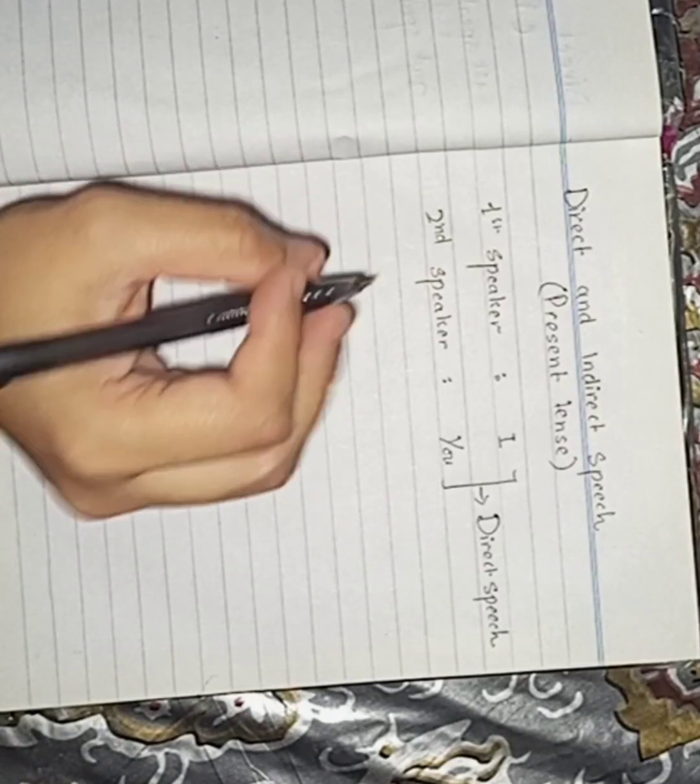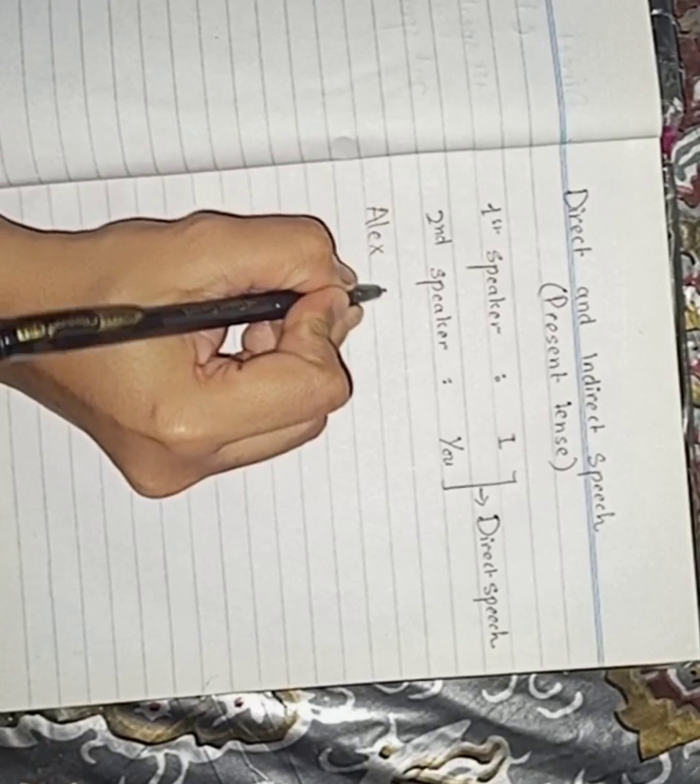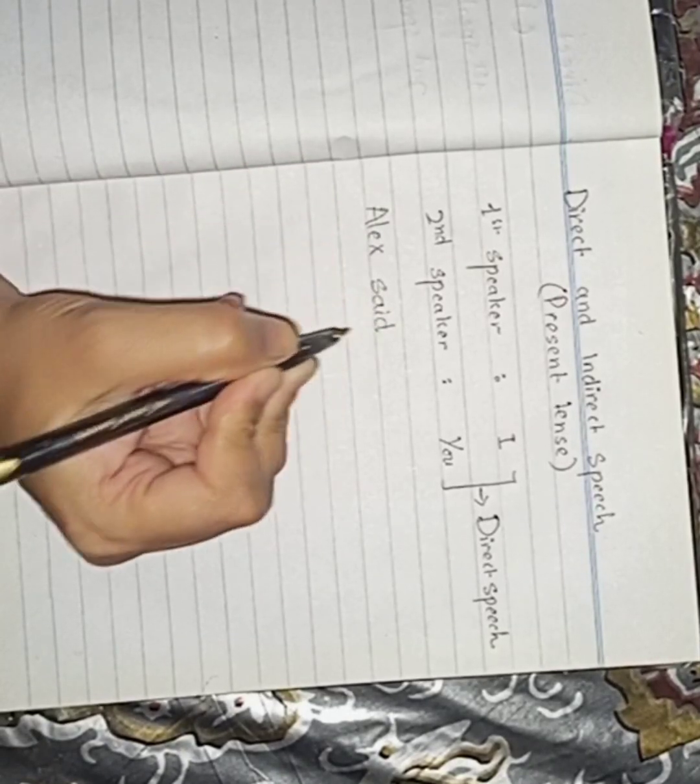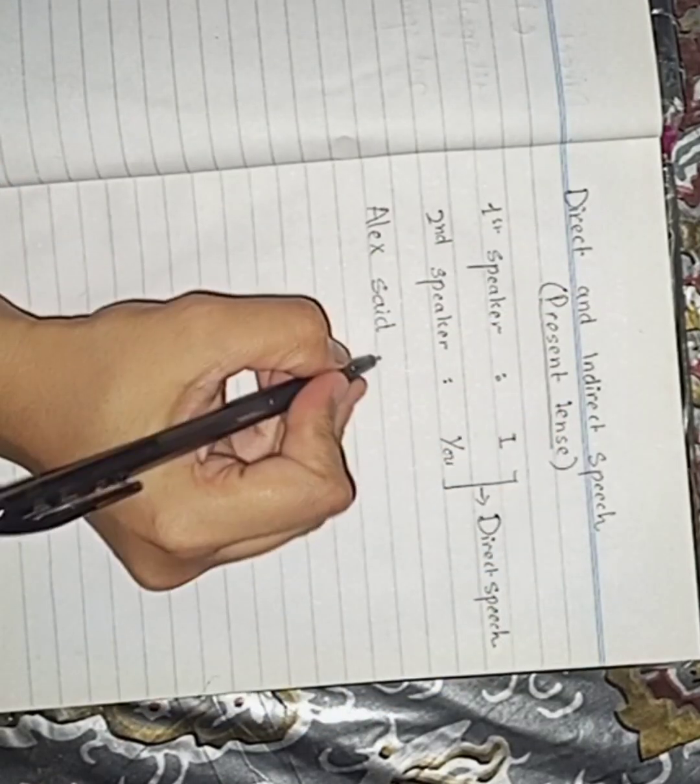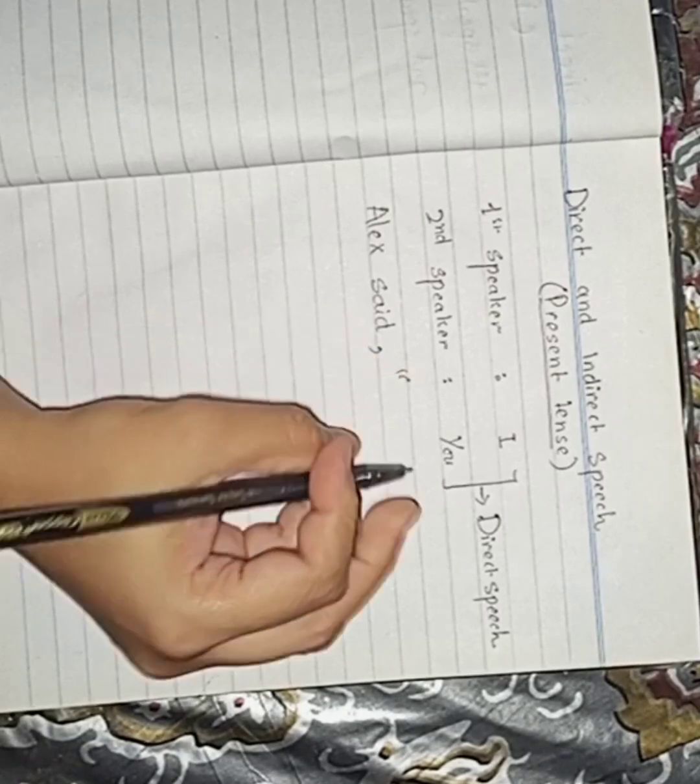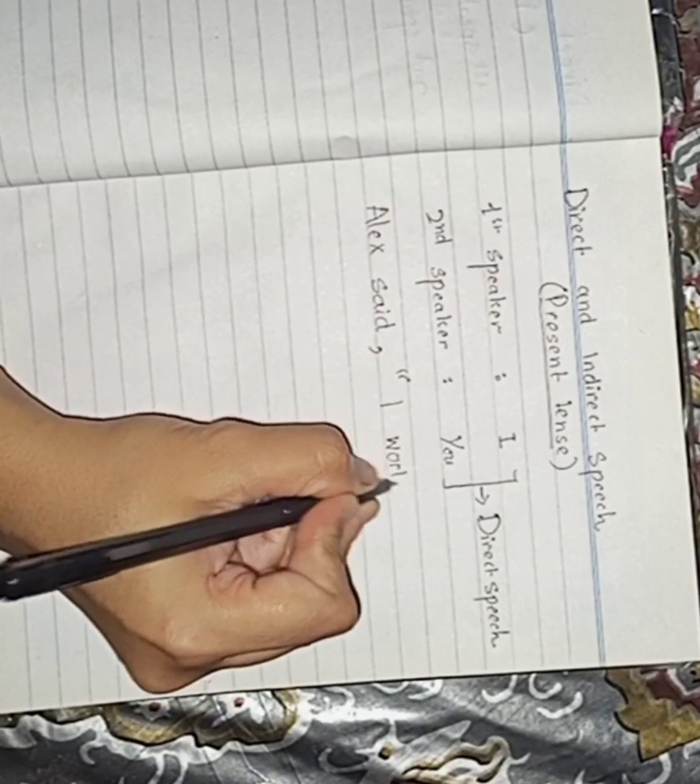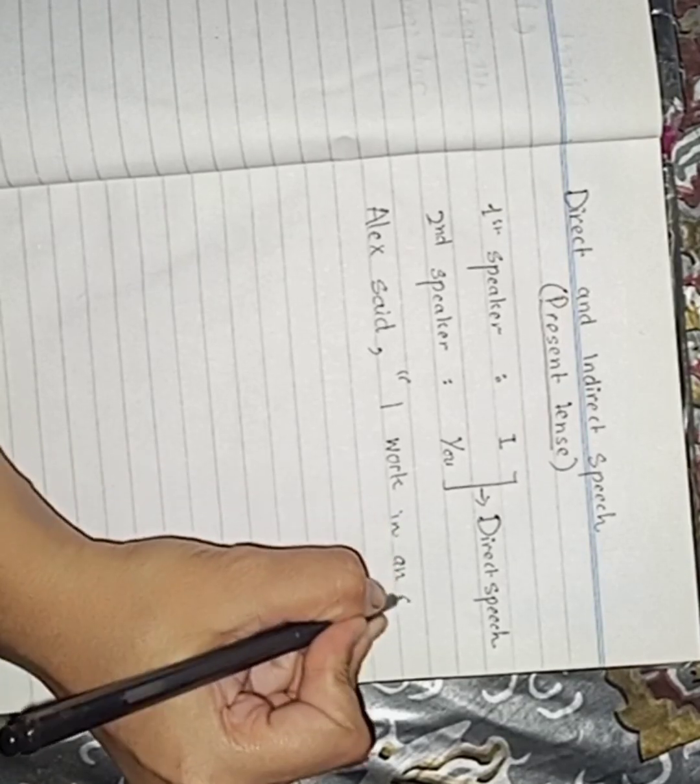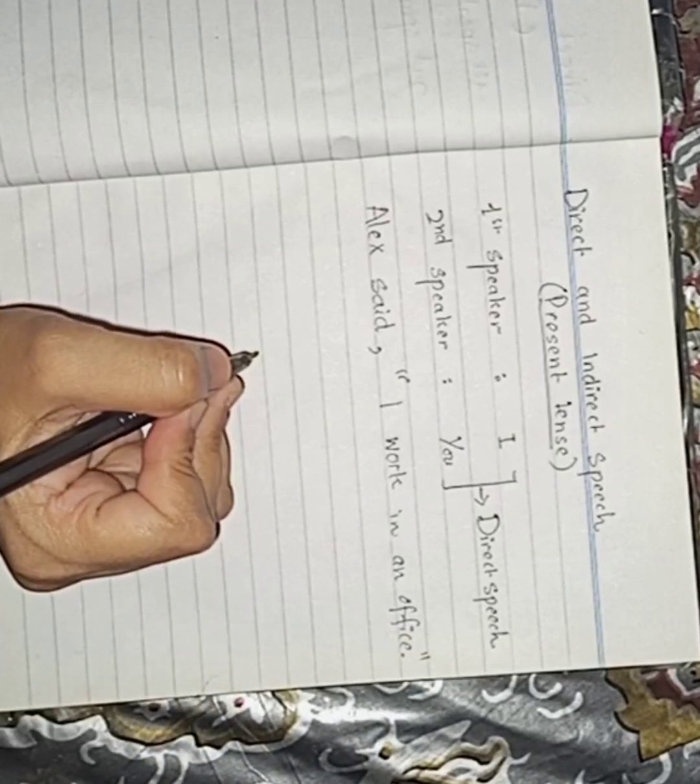Now let's have a look at an example sentence. For example, we say, Alex said... remember we are today going to learn about present tense in direct and indirect speech. So we need to choose a sentence with the present tense. Alex said, 'I work in an office.' Inverted commas over.